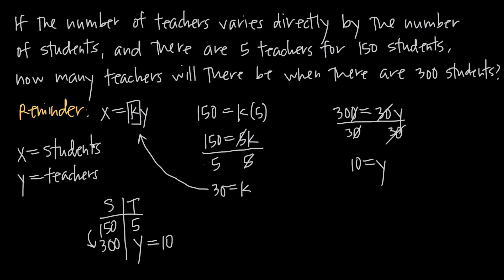You can test yourself by flipping the variable assignment — make x equal to teachers and y equal to students. When you do that and plug in the values, you'll get a different value for k, but when you use that k to solve for teachers with 300 students you'll get the same answer. It's a reciprocal value of k, but the final answer is identical, proving it doesn't matter how you assign the variables as long as you stay consistent.